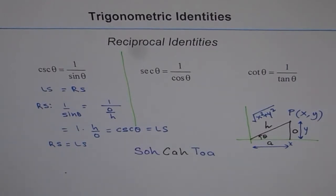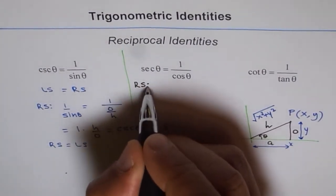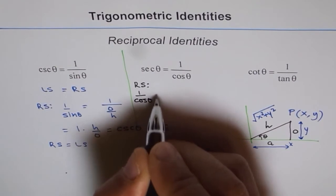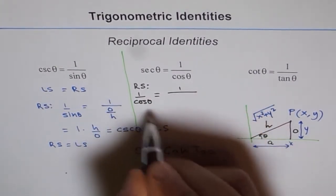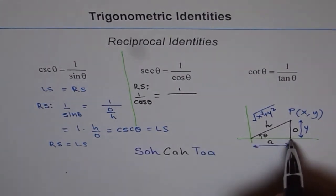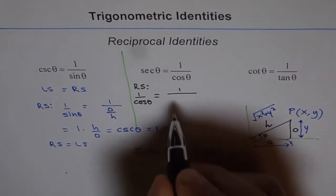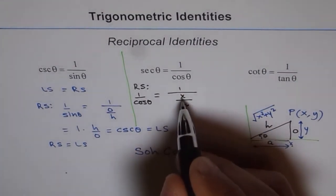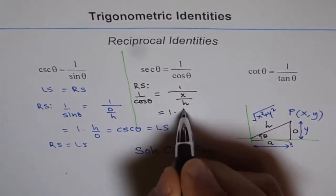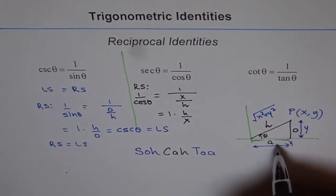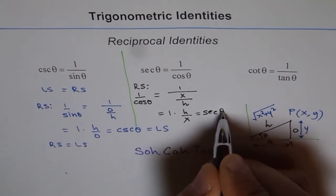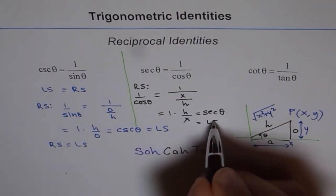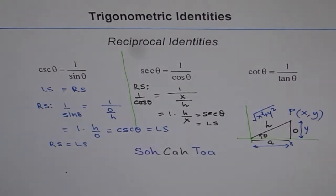For the second identity, the right-hand side is 1 over cos theta. Using x and y coordinates, cosine theta equals x over h — that is, adjacent over hypotenuse. Then 1 divided by x over h equals h over x, which is secant theta. So we've proved the reciprocal of cosine theta is secant theta.